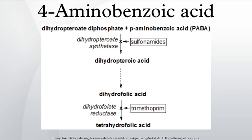Humans lack the enzymes to convert PABA to folate, so require folate from dietary sources such as green leafy vegetables. In humans, PABA is considered non-essential and, although it has been referred to historically as vitamin BX, is no longer recognized as a vitamin.